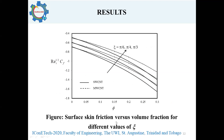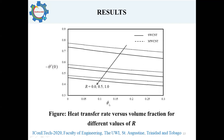We also see a plot of the surface skin friction on the surface of the stretching sheet versus the volume fraction of nanoparticles and the angle of inclination of the magnetic field. We observe that as the inclination angle of the magnetic field is increased, there is an increase in the friction on the surface of the stretching sheet. We also notice that as the concentration of each of the nanoparticles is increased, there is a reduction in the friction on the stretching surface. Finally, we have a figure depicting the heat transfer rate for different values of nanoparticle concentration and the thermal radiation parameter R. As both of these parameters increase, there is a reduction in the heat transfer rate near the surface of the stretching sheet.